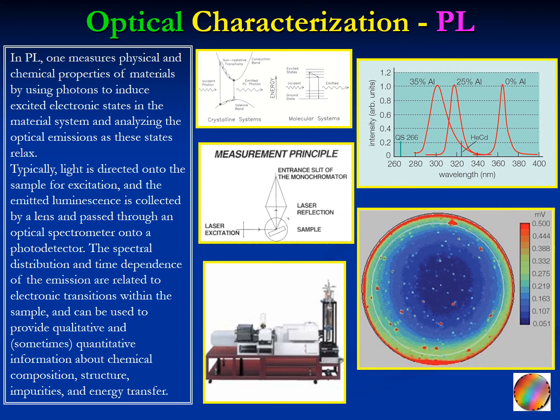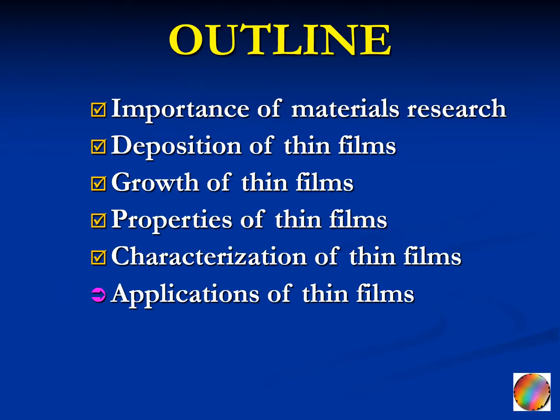A third optical technique is photoluminescence. You shine a laser on the sample; if the sample is optically active, it will emit light. You detect the emitted luminescent light, and from there you can get information about the band gap, the defect states, their locations, and even the chemical composition of the sample. These are some of the most important characterization techniques used to study the properties of thin films.